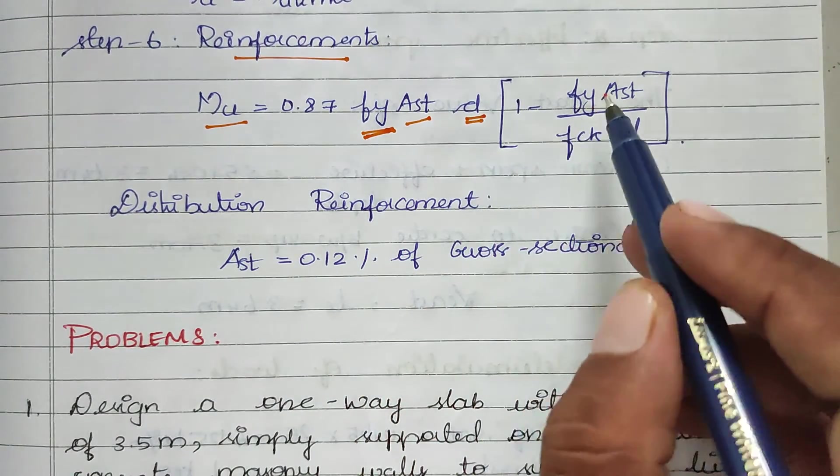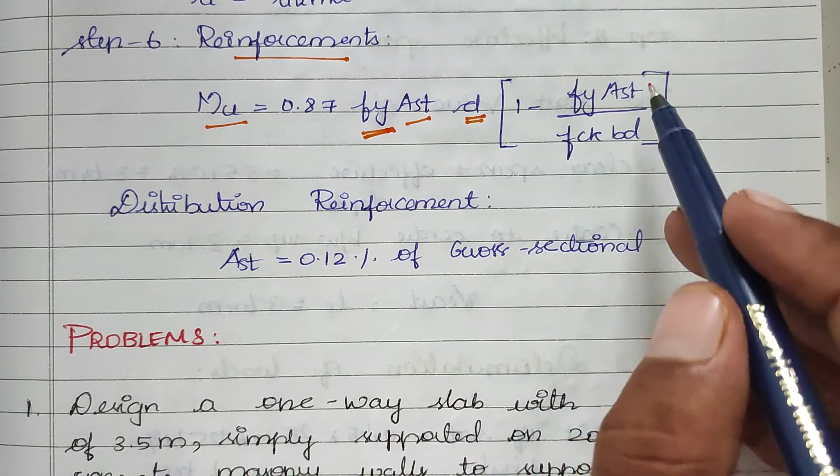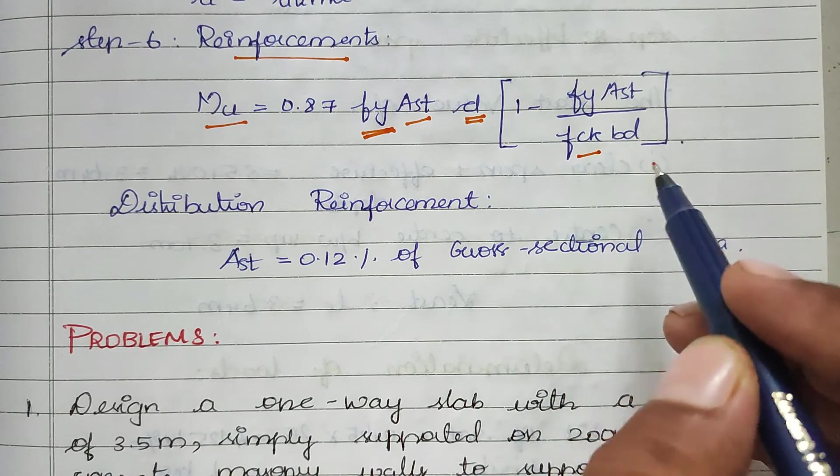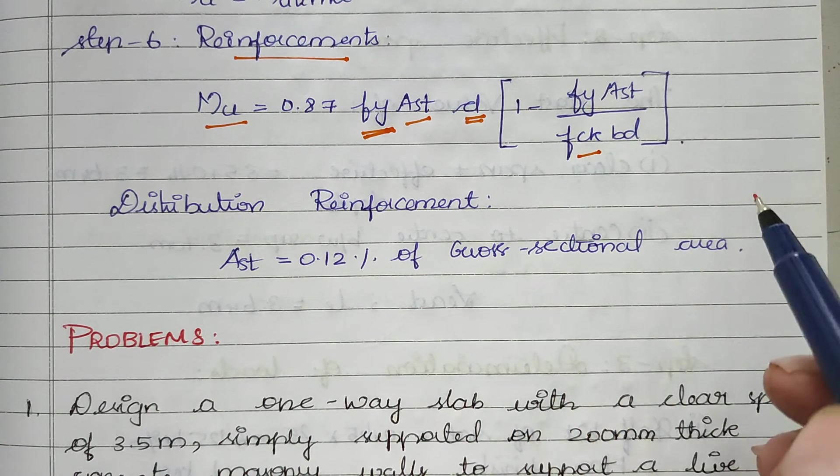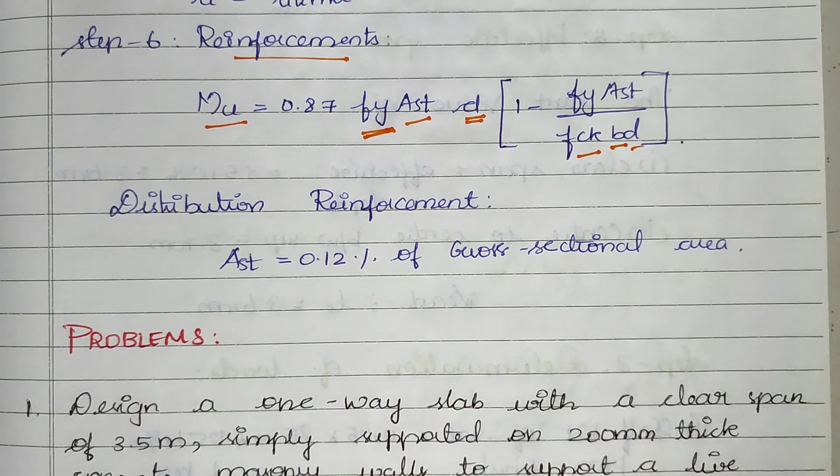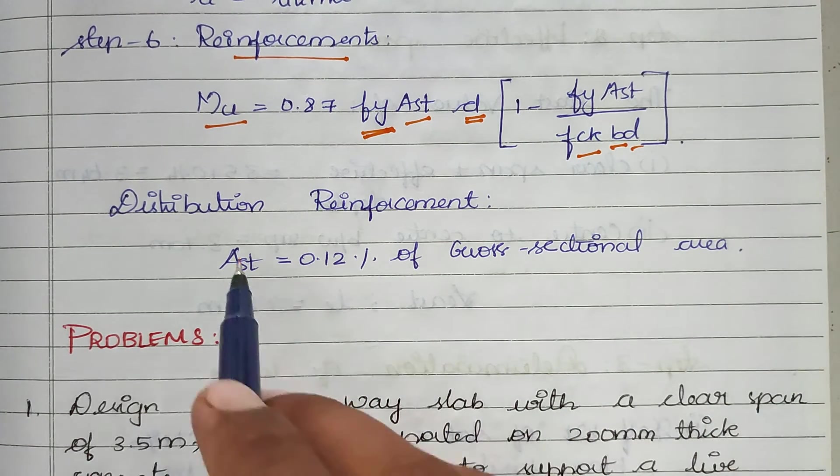Where Mu is moment, fy is characteristic strength of steel, Ast is area of reinforcement, d is effective depth, fck is characteristic compressive strength of concrete after 28 days, b is width, and d is depth.